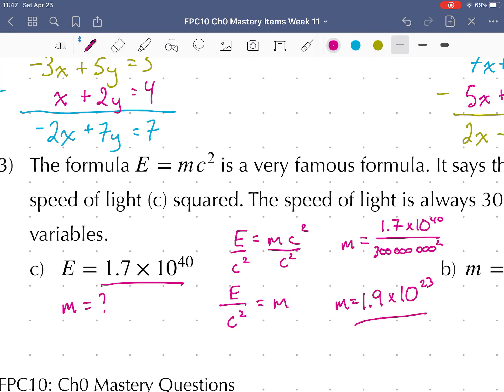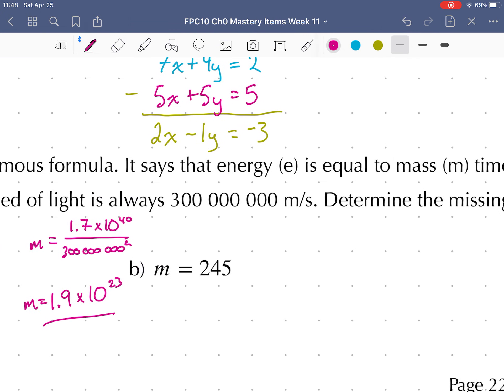This should make sense. A big energy gives us a smaller mass. I mean, it's still a huge mass, but the energy number is way bigger.